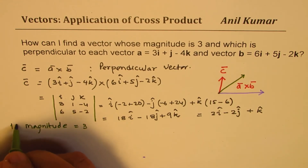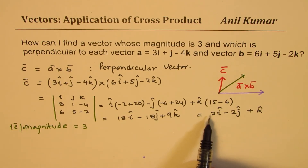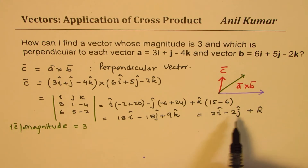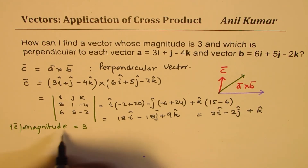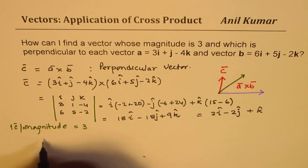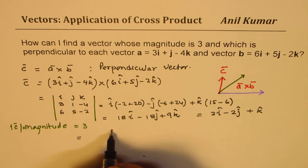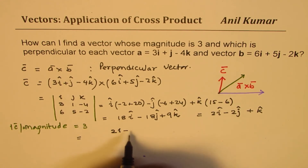The magnitude of vector C should be 3. To get that, we have to divide this vector by its magnitude and multiply by 3. We are essentially finding a unit vector and then scaling by 3. We have the vector 2i − 2j + k.